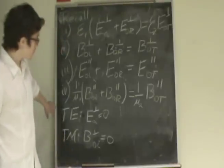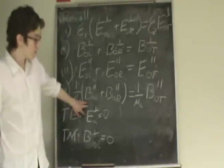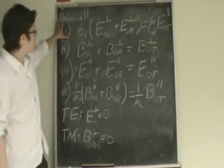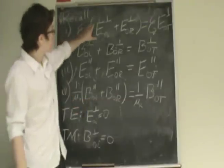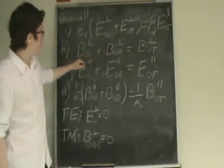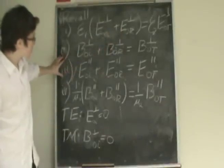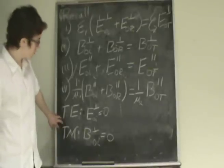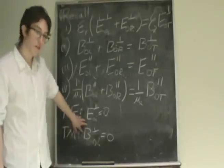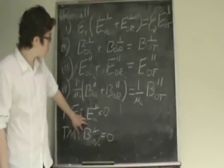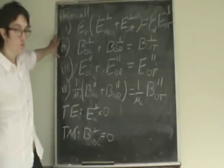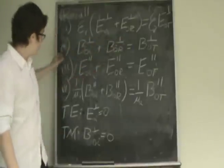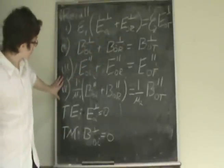For the transverse electric case, the perpendicular component of the electric part of the incoming wave is equal to zero. Therefore, looking at equation 1, this just becomes zero equal to zero — it cancels out. Equation 3 is going to govern how the electric part of the wave behaves. For the transverse magnetic case, the parallel component of the magnetic part of the incoming wave is equal to zero. Therefore, equation 2 is just zero equaling zero, and equation 4 governs the magnetic part of the wave.